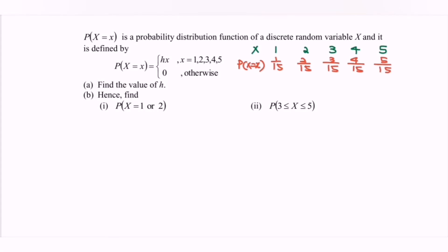Before we continue, my suggestion is to also build the cumulative distribution table, denoted as capital F. The cumulative values are: F(1) = 1/15, F(2) = 3/15 (sum of x=1 and x=2), F(3) = 6/15, F(4) = 10/15, and finally F(5) = 15/15, which equals 1.